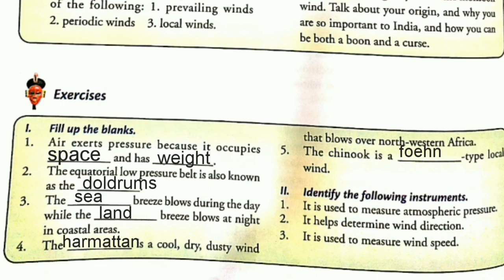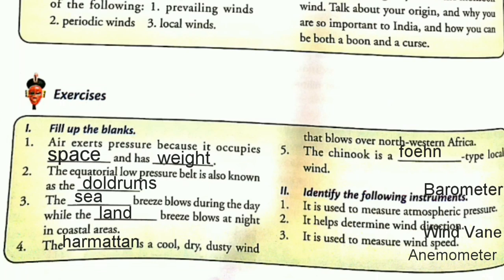Next, identify the following instruments. First: it is used to measure atmospheric pressure. The instrument used to measure atmospheric pressure is the barometer. Next: it helps determine wind direction. The instrument is the wind vane. Next: it is used to measure wind speed. The instrument used to measure wind speed is the anemometer.